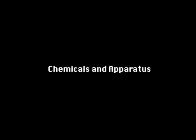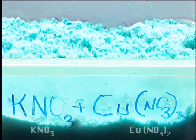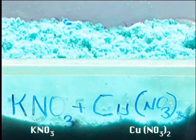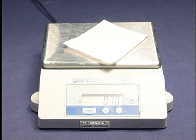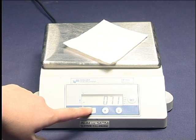Recrystallization. Chemicals and apparatus: mixture of potassium nitrate and copper nitrate. Determine the tare of a piece of paper, then put about 10g of potassium nitrate and copper nitrate mixture.